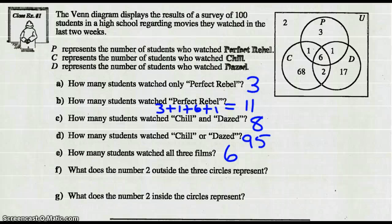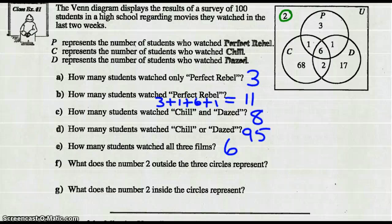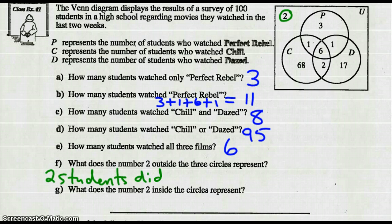What does the number 2 outside of the three circles represent? That would represent the fact that two students did not watch any of the three movies.